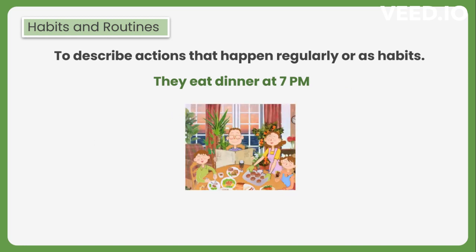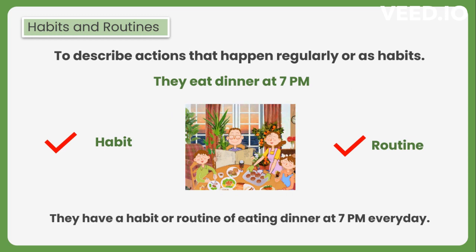In the next example also, it means that they have a regular habit of having dinner at 7 p.m. This describes a recurring action that happens as part of their routine. It simply states that they typically have their dinner at 7 p.m. Likewise, we can use simple present tense to describe our habits and routines that occur regularly.